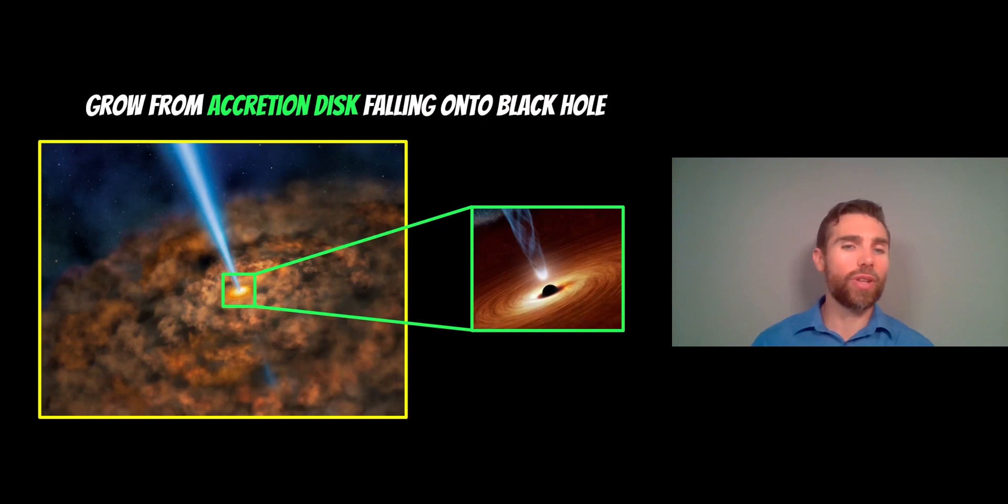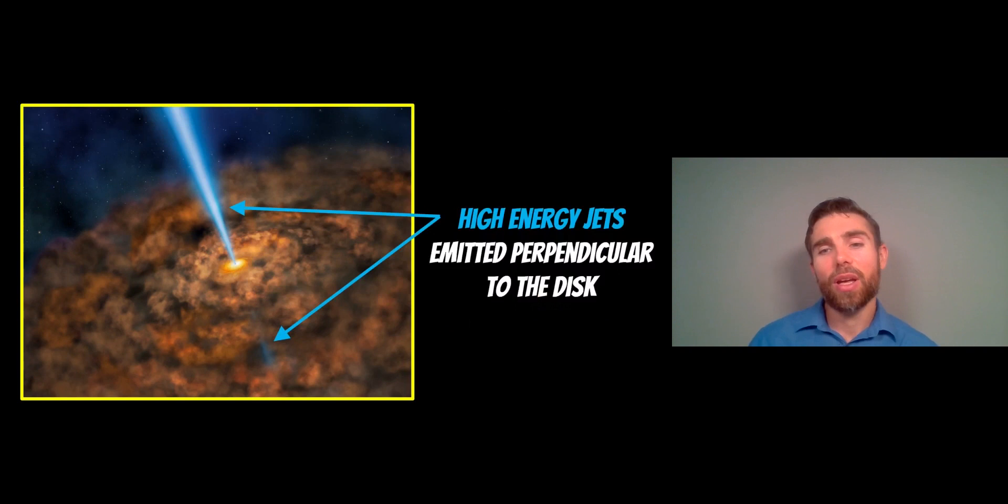How do they actually grow? They mostly grow from an accretion disk - a disk of material that orbits around the black hole. Let's say it's gas and dust from somewhere else in the galaxy. It orbits around, then falls onto the black hole. As it does, you get these large perpendicular jets coming from essentially the poles of the spinning black hole. These high-energy jets, which we saw images of from real galaxies, are a significant part of the galaxy, outshining the entire galaxy. They're emitted perpendicular to that disk, and this is basically how they grow.